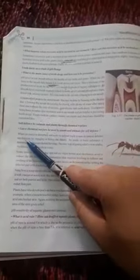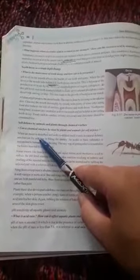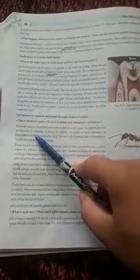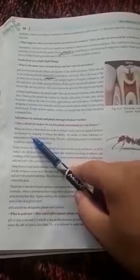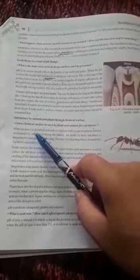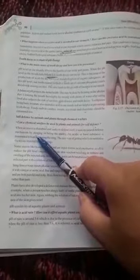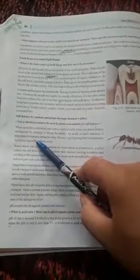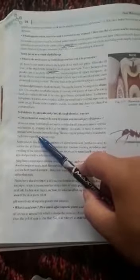Can chemical warfare be used by plants and animals for self-defense? Now, what does it mean? When an insect is disturbed and seeks to defend itself, it uses natural defense mechanisms by stinging or biting the enemy. That is, whenever we disturb any insect, it will sting us or bite us.